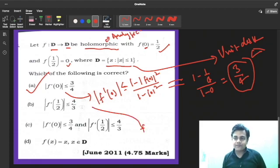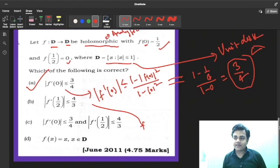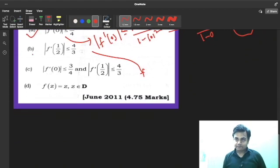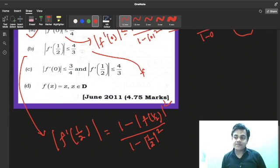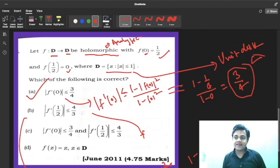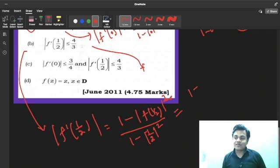Now you have to do the same thing for F dash half. From Schwarz's Pick Lemma, F dash half will become 1 minus mod F of half chi square upon 1 minus half ke mod chi square. 1 minus mod F of z chi square and 1 minus mod z chi square. It will become 1 minus F of half, and F of half is 0, so it's 0 chi square upon 1 minus 1 by 4. It will become 1 by 3 by 4, so it will become 4 by 3.